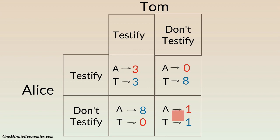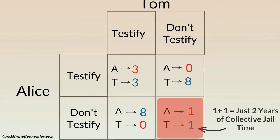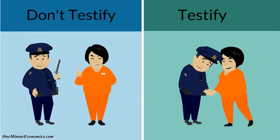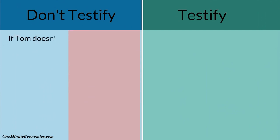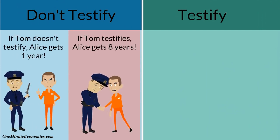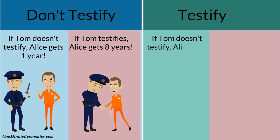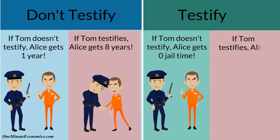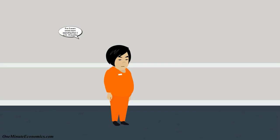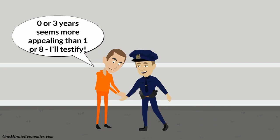Obviously, it seems in their best interest that neither of them testifies, as only two years of total jail time would result — one for each. However, let's look at things from their perspective. Alice sees that if she doesn't testify, there are two outcomes: one in which she gets one year, and one in which she gets eight. She then sees that if she testifies, she either gets zero jail time or three years. Testifying, therefore, seems more appealing. The same thing goes for Tom.